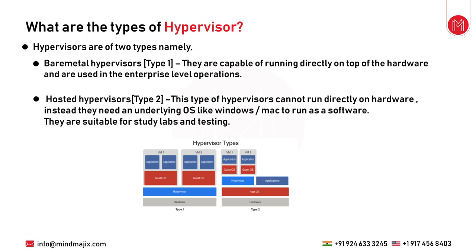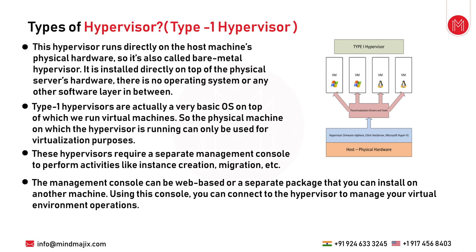Type 1 bare metal hypervisors are best for enterprise workloads — they have enough provisions for all operations and management. Hosted hypervisors are used for testing, small environments, or study purposes. Bare metal hypervisors run directly on hardware with their own kernel; hosted hypervisors run on Windows, Mac, or Linux as software. Bare metal hypervisors handle huge loads for enterprise-level operations, while hosted hypervisors are suitable for study labs and testing.